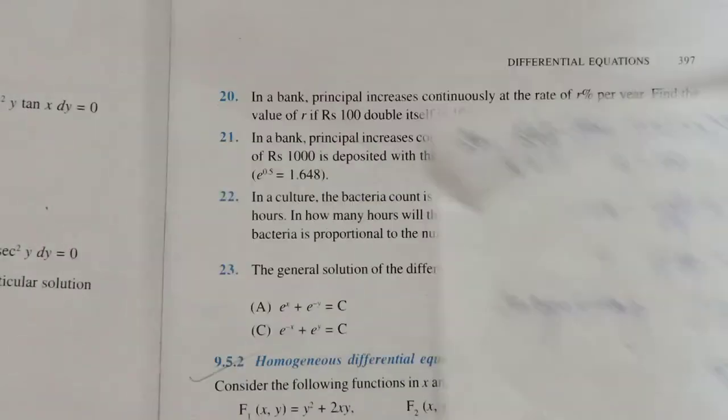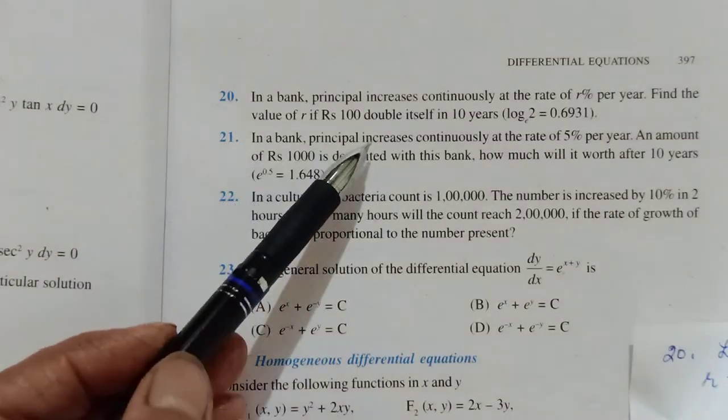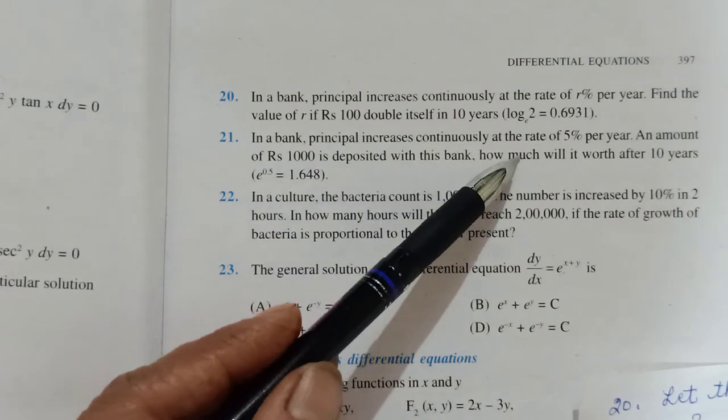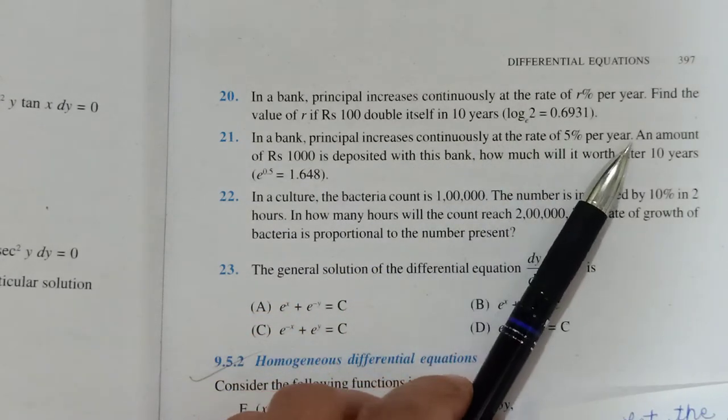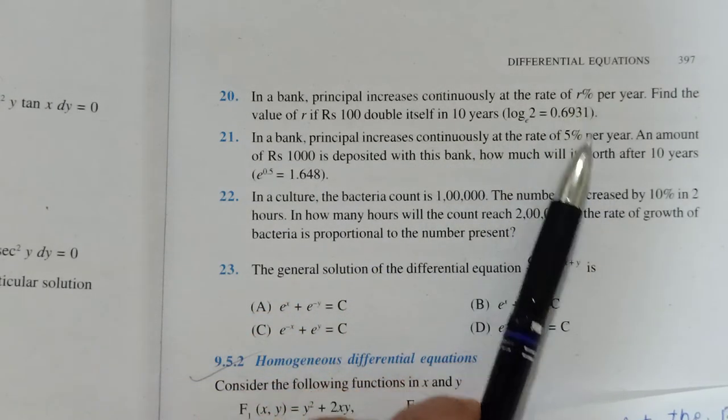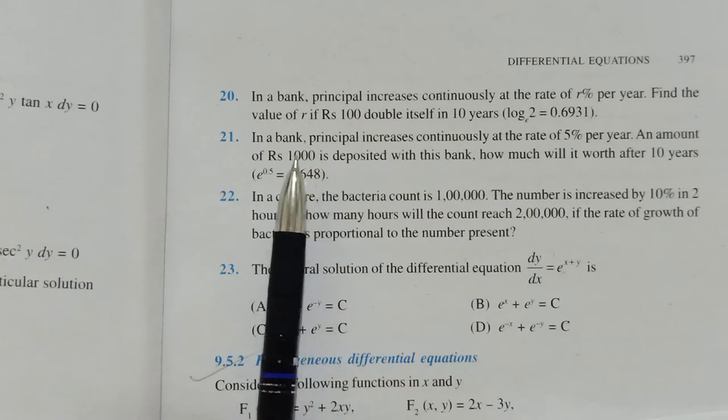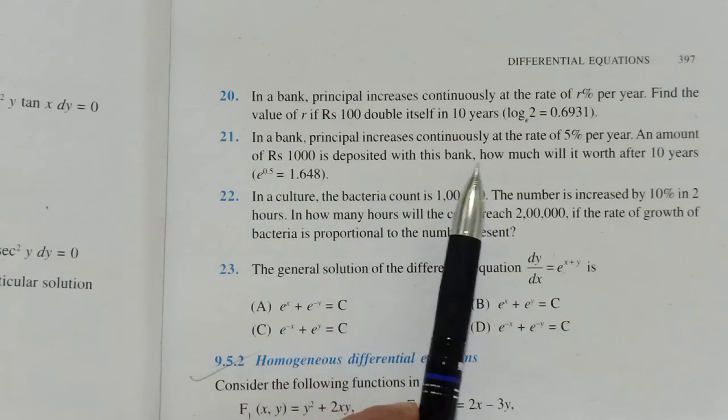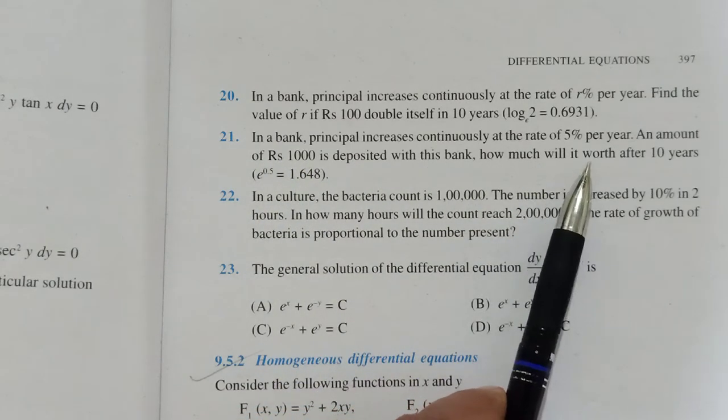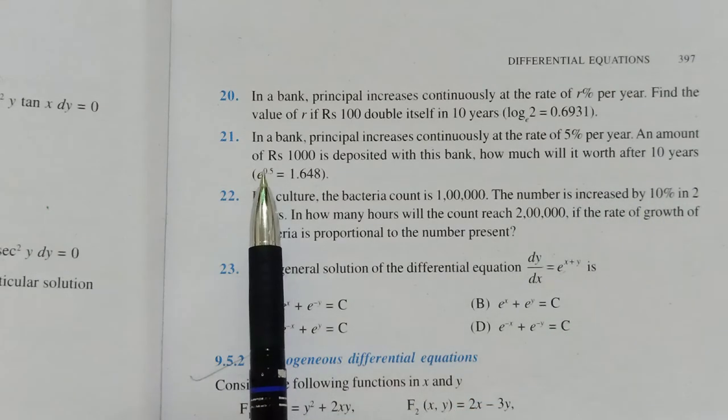Okay, similar is your next question children. In a bank again, principal is increasing continuously at the rate of 5% per annum. You have to evaluate, very easy. Here you already know your constant rate as 5, and an amount of rupees 1000 is deposited in this bank. How much will it be worth after 10 years?